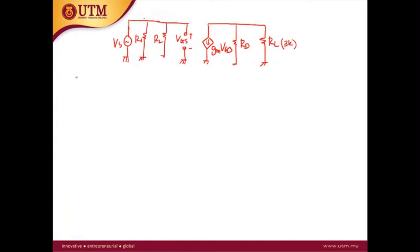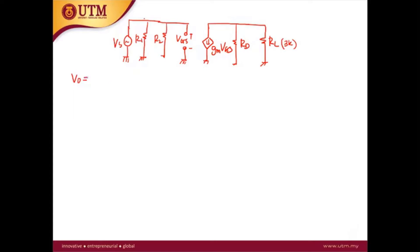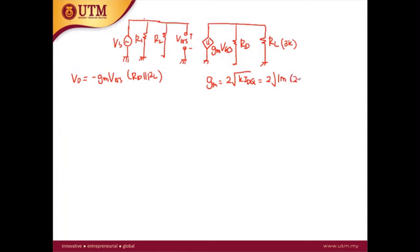We use the voltage gain expression. Vout is equal to minus gm*VGS times RD parallel with RL. We can calculate gm since gm equals 2 times k times IDQ. k is given as 1 milli and IDQ is 2.25 milliamperes, giving gm equal to 3 millisiemens.